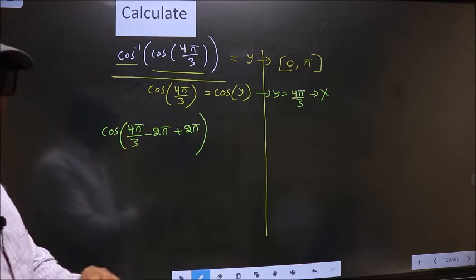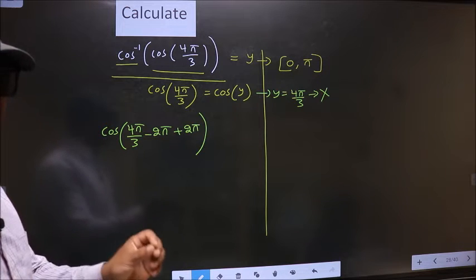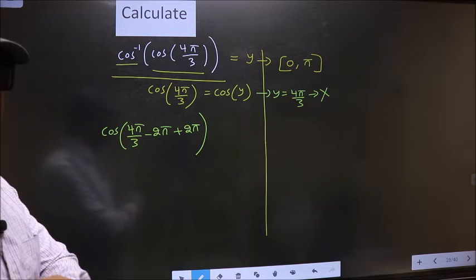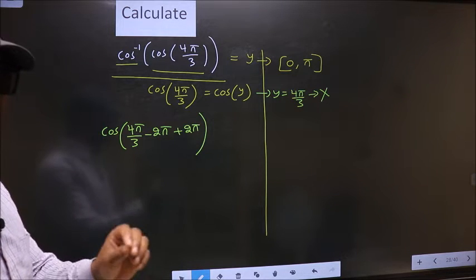In cos inverse sums we should only subtract the even multiples of pi. That is 2 pi, 4 pi, 6 pi, 8 pi like that. Remember this point.